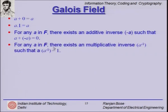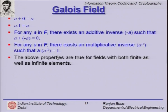Similarly, for any element a in F there must exist a multiplicative inverse, except for 0. If a · b = 1 then b is the multiplicative inverse of a. Please note that this set of properties we have covered so far is true for fields with both finite as well as infinite elements.